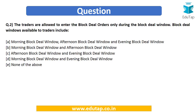Now let's move to the next question. Traders are allowed to enter block deal orders only during the block deal window. The block deal windows available to traders include: (A) morning, afternoon and evening block deal window, (B) morning and afternoon block deal window, (C) morning and evening block deal window, or (D) none of the above.